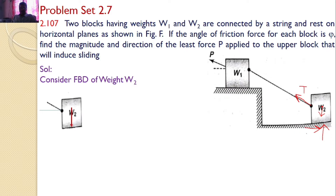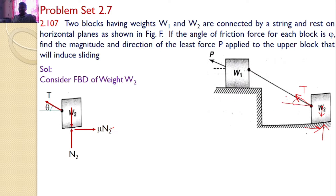The first force is W2. Normal reaction, let us say, is N2. There is a frictional force towards the right side, that is mu times N2. And there is a tension in the string, T. Let this string make an angle theta with the horizontal.